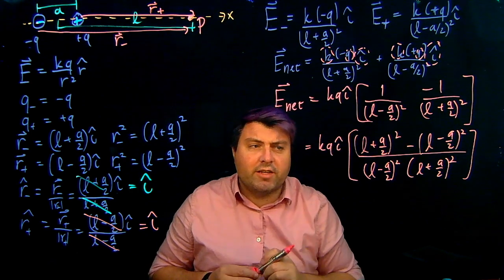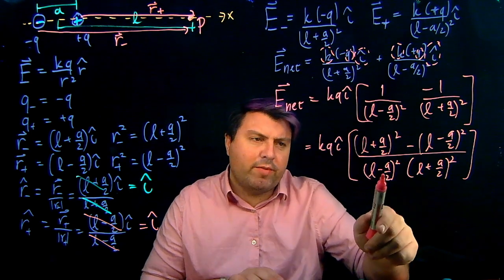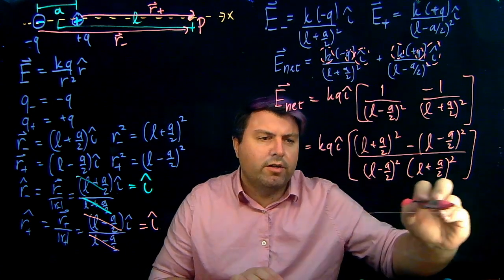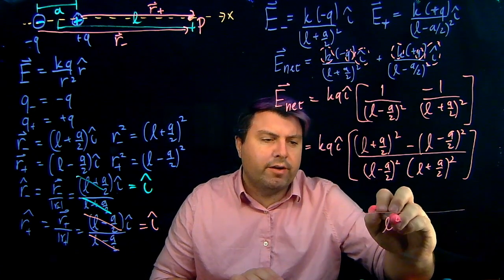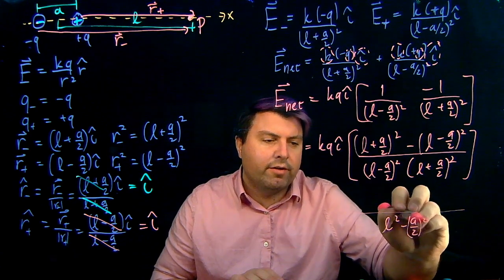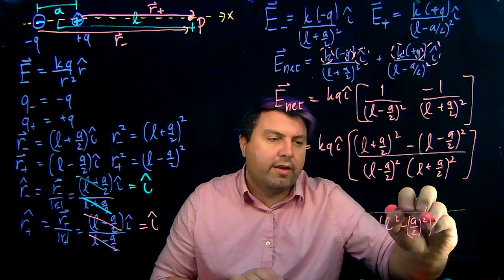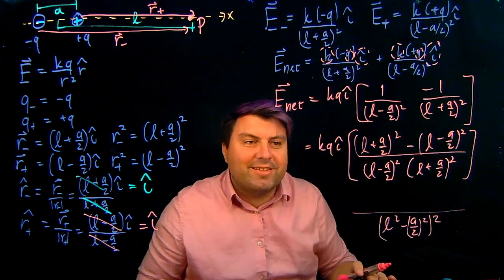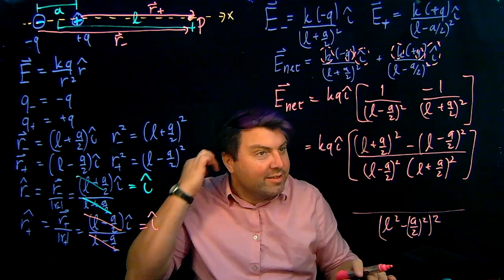So just a few steps left to go. We can notice that L minus A over 2 and L plus A over 2 are difference of squares. So we can write L squared minus A over 2 squared, and then, since we have two of those, we've got to square that again. Maybe it's not so much nicer, but maybe it is.